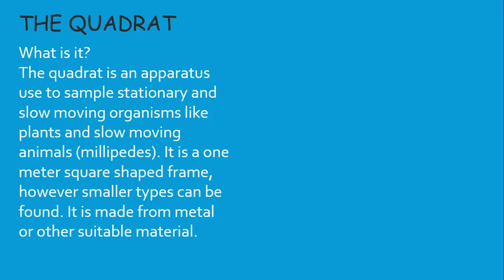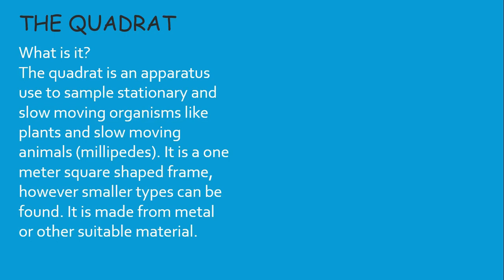What is the Quadrat? The Quadrat is an apparatus used to sample stationary and slow-moving organisms like plants and slow-moving animals, for example millipede. It is a 1 meter square shaped frame, however smaller types can be found. It is made from metal or suitable material.